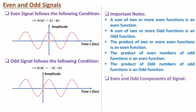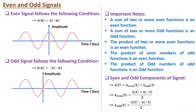I'll discuss how to identify even and odd components of a given signal. If I have a signal X(t), it has two components: even and odd. The even component is [X(t) + X(−t)] / 2, and the odd component is [X(t) − X(−t)] / 2. Using these equations, I will be solving examples in future videos.